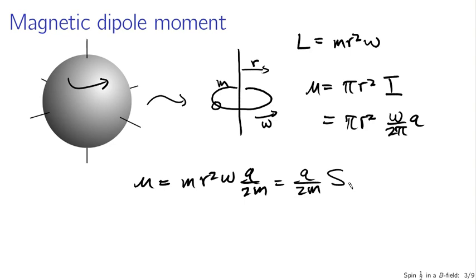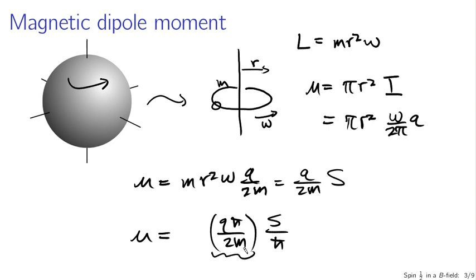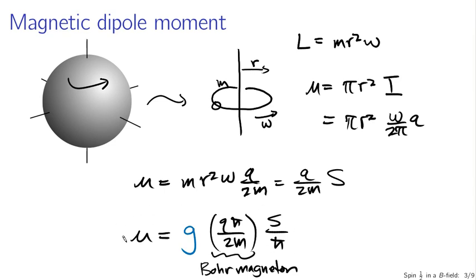It's conventional to write this magnetic dipole moment as q h-bar over 2m times the spin angular momentum divided by h-bar, where this quantity is called the Bohr magneton. However, this expression doesn't actually work. The Bohr magneton, while a fundamental unit of magnetic dipole moment, does not actually give you the dipole moment of a spinning electron. We have to add a fudge factor called g, which gives a correction to the proportionality between spin angular momentum and magnetic dipole moment.